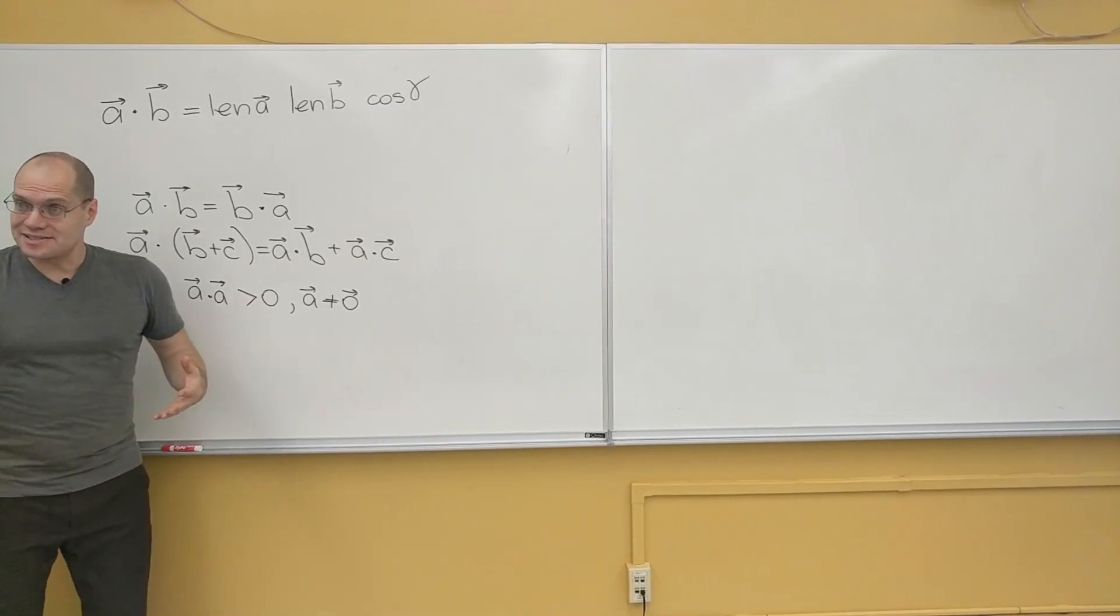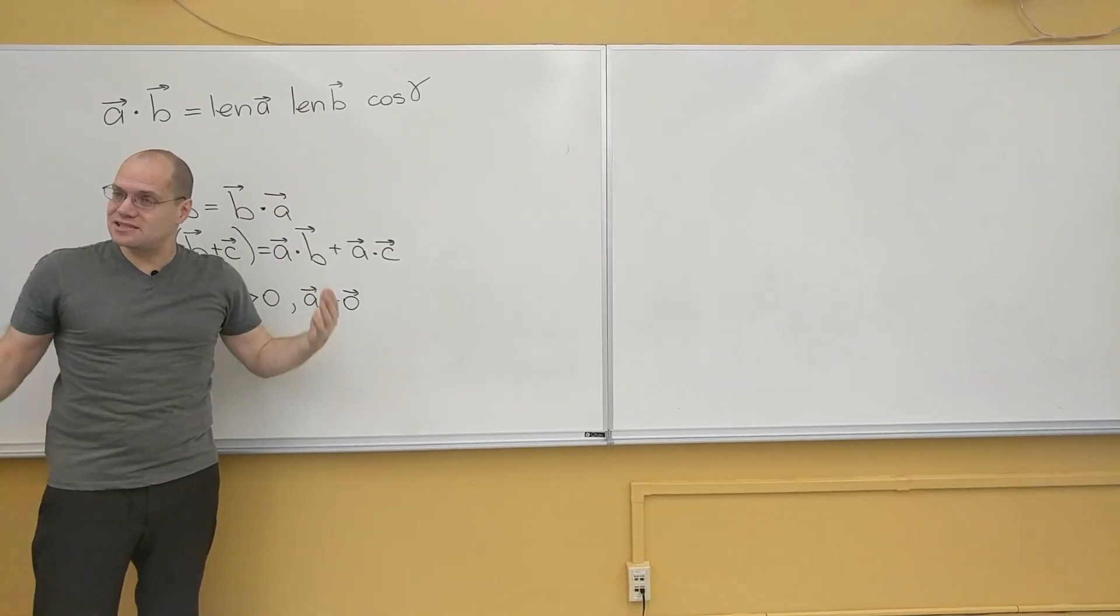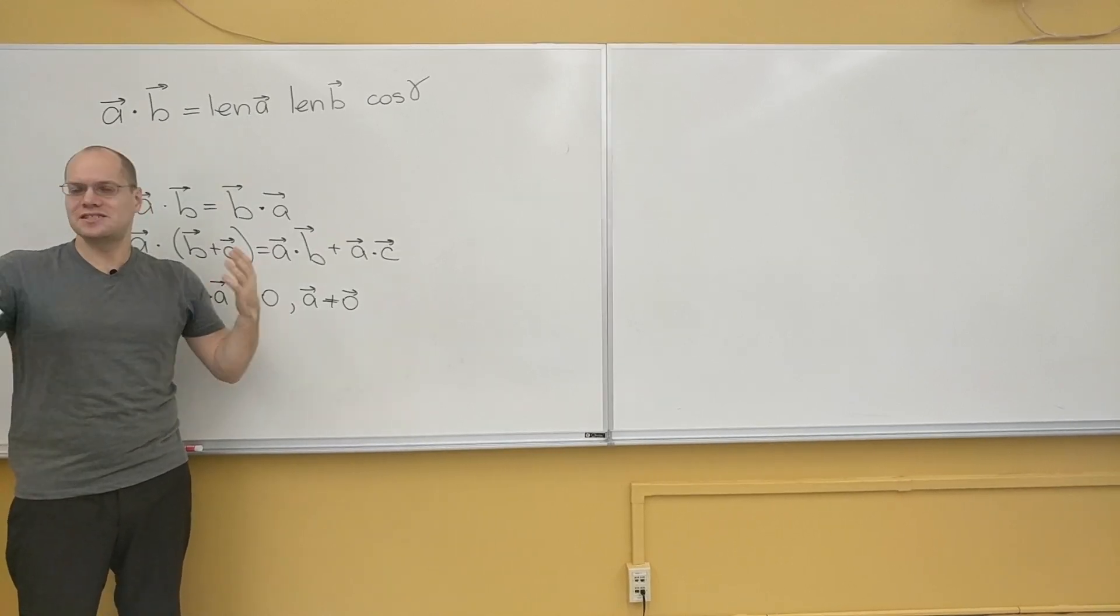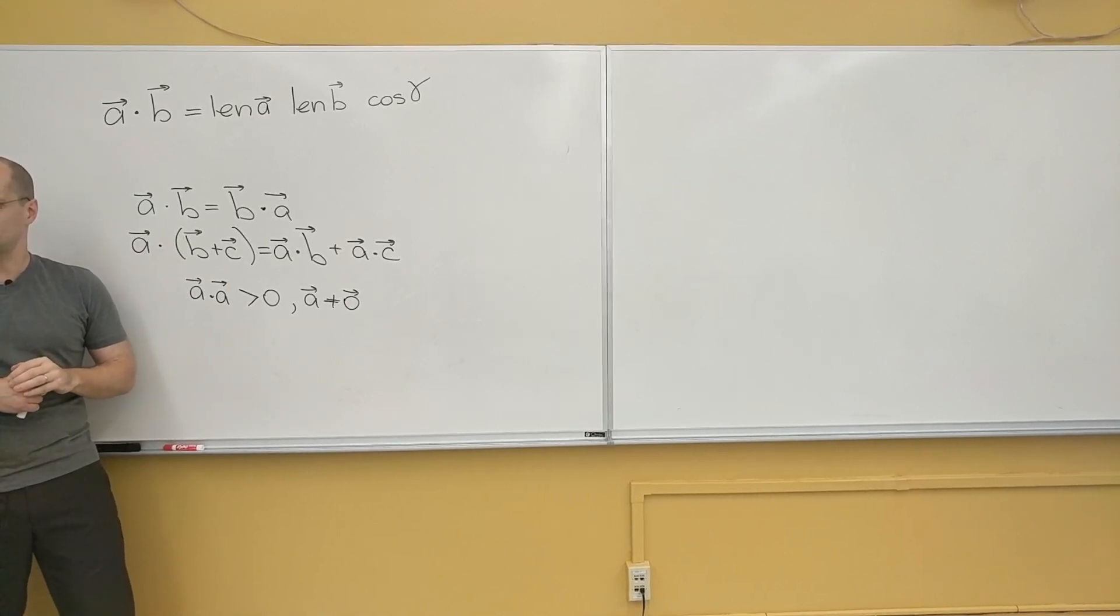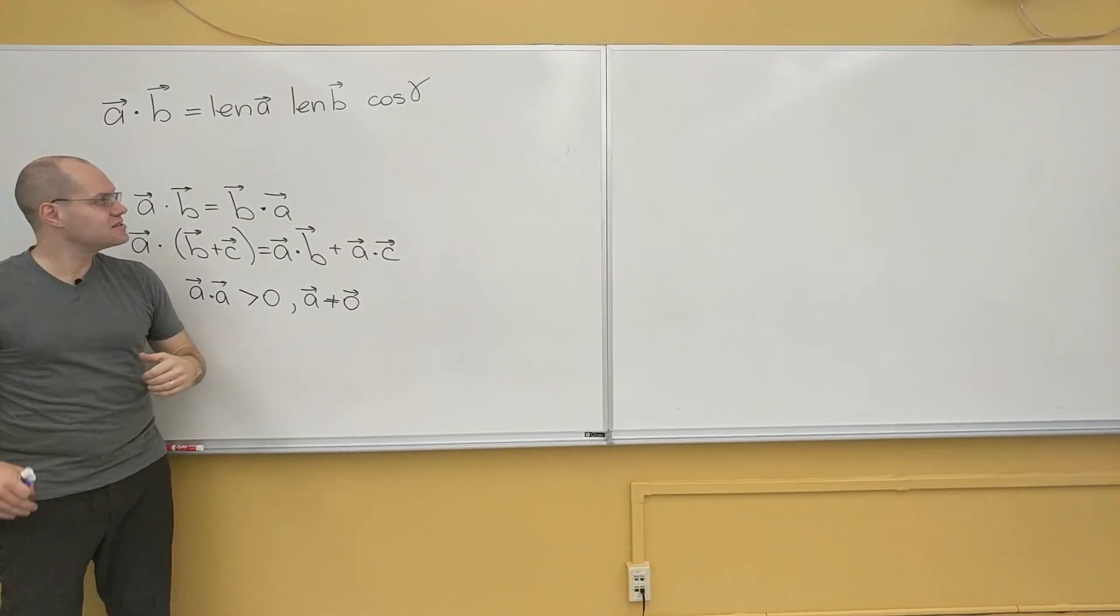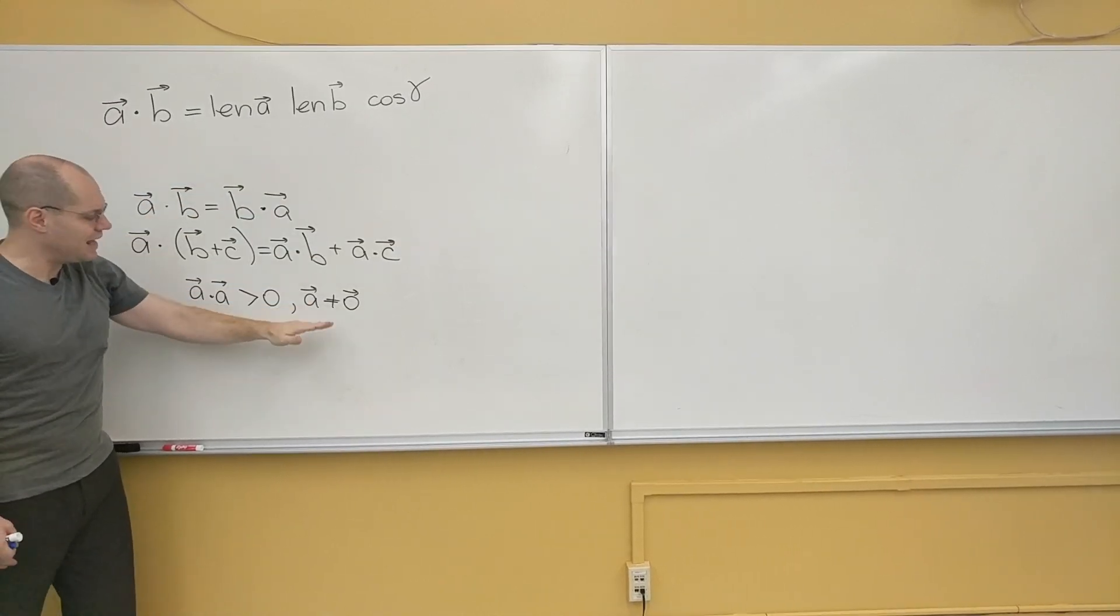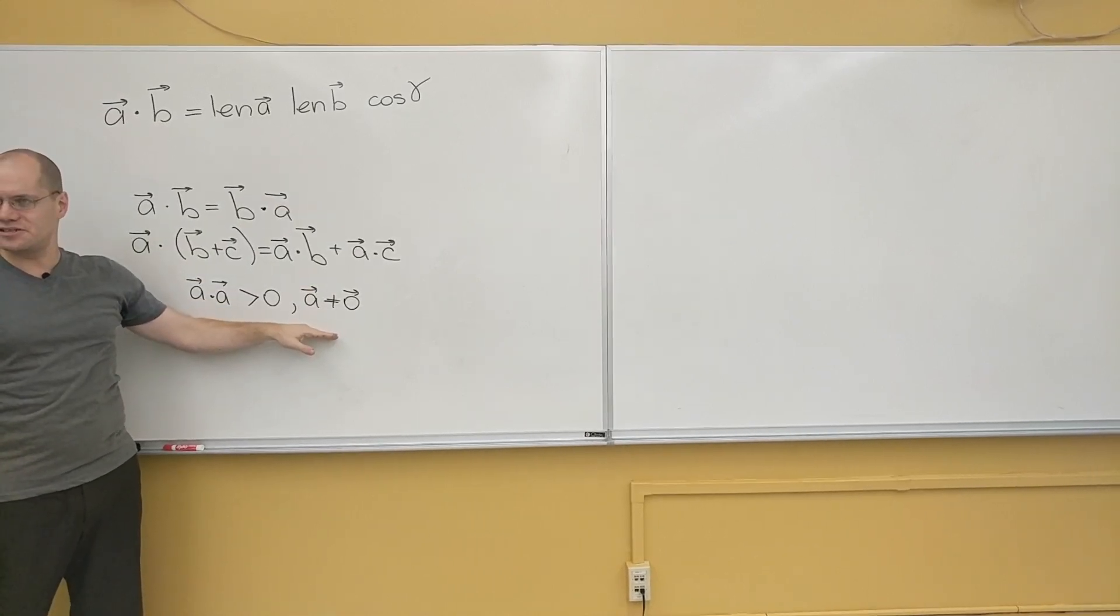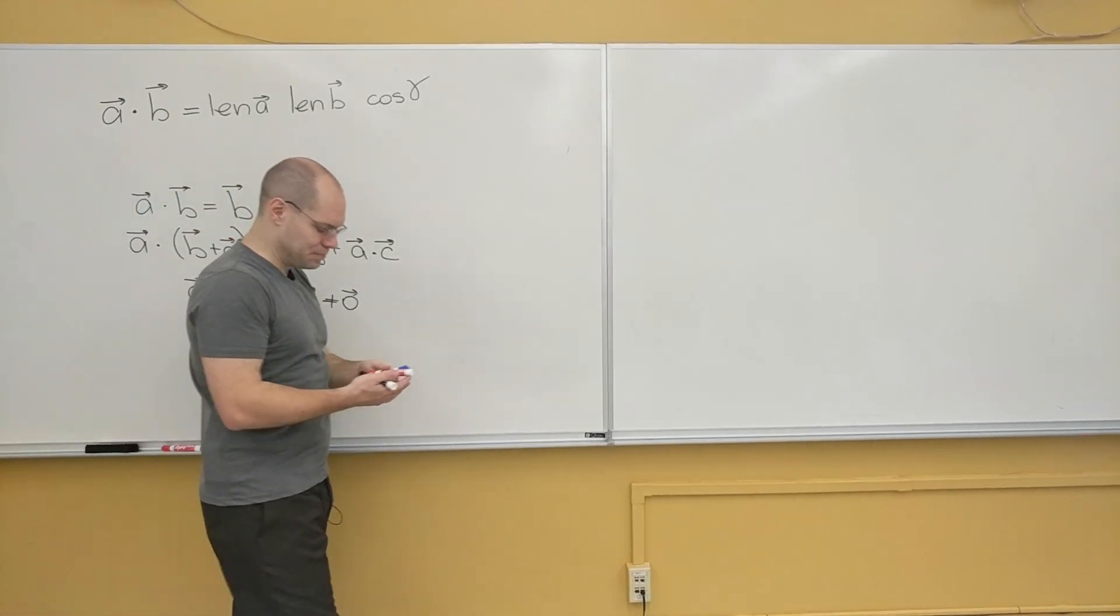And then in that context, this becomes one specific example of one specific inner product for one specific type of vectors, geometric vectors. So that's the relationship. So in this class, we will only use this as the definition, and this as its properties. In linear algebra, this is the definition, and this is one example of inner product. So that's two approaches to the inner product, but you also know a third.